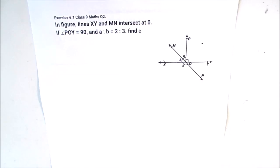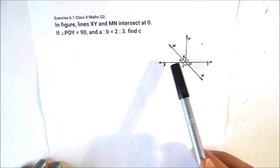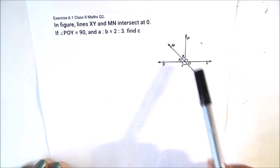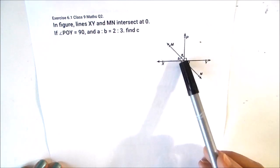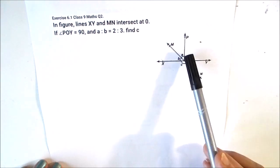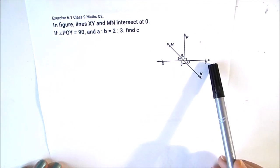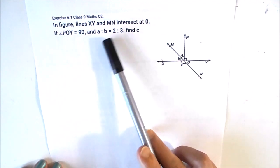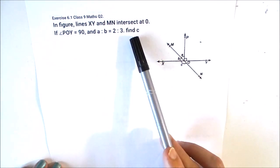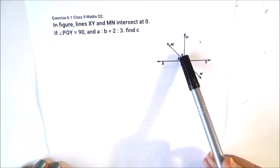Hello students, here we are with another interesting geometry problem taken from class 9th math and NCERT book exercise 6.1, question number 2. The question is: in the given figure, lines XY and MN intersect at O. If POY is equal to 90 degrees and the ratio a to b is equal to 2 to 3, find angle C.